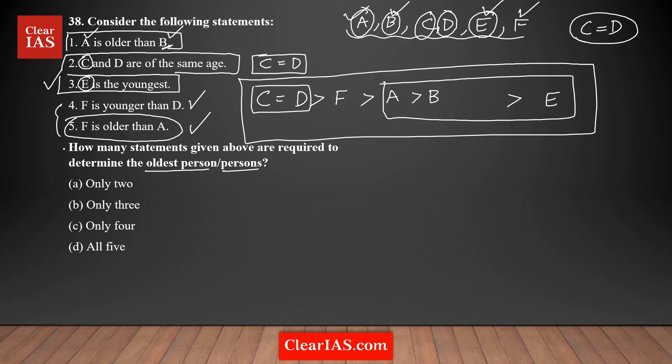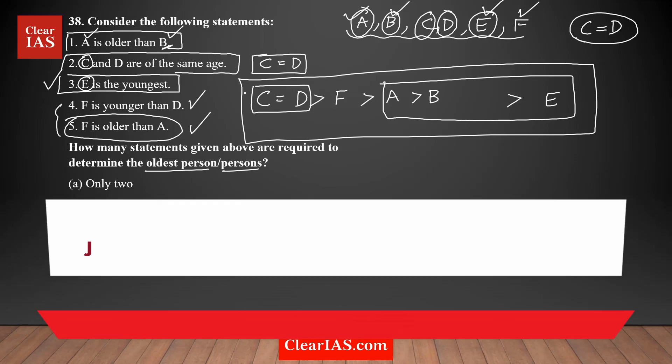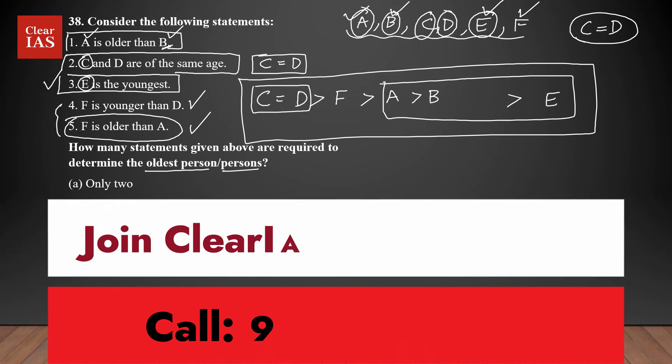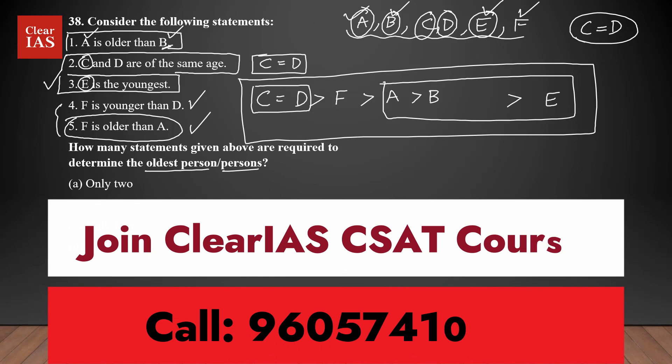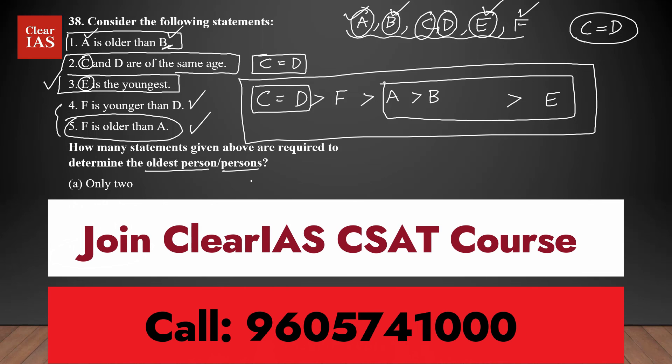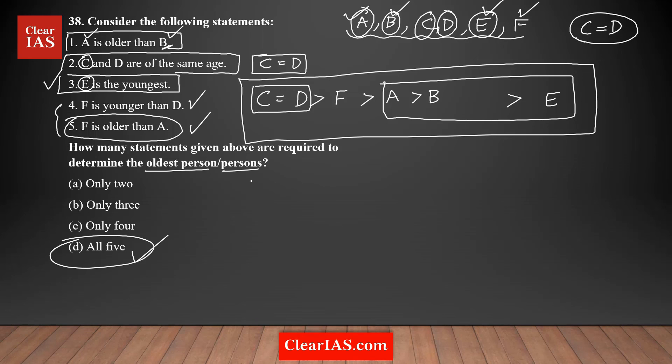You need all five statements to determine the oldest person among the six people. So the answer is option D. This is a reasoning-based question.